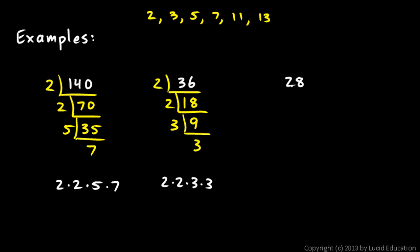So number 28. Or the next example, 28. Again, we start with the 2. 28 is divisible by 2. It's 2 times 14. And 14 is divisible by 2. It's 2 times 7. And we're done. So the answer is 2 times 2 times 7.